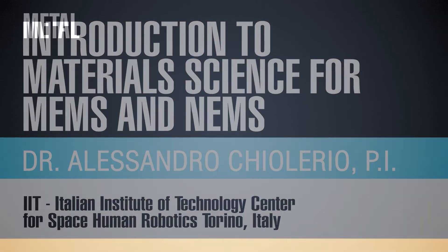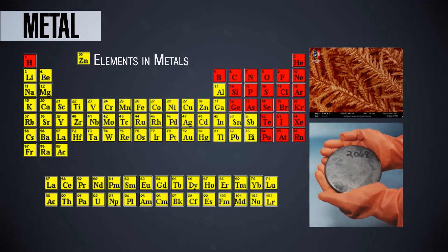This is a distribution of the metals on the element table, the periodic table we have seen before. All the metals are marked in yellow and you can see how many of them are there in the table.